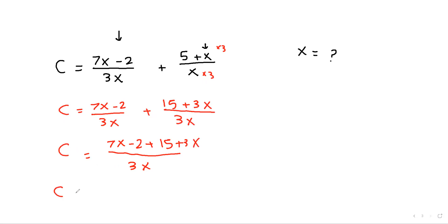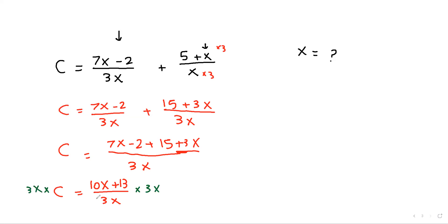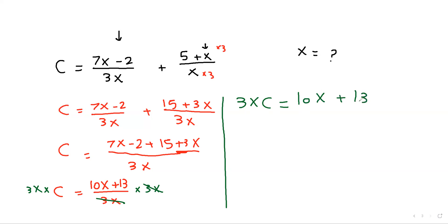Both fractions now share denominator 3x, so we combine them: c equals (7x minus 2 plus 15 plus 3x) over 3x. Collecting like terms: 7x plus 3x equals 10x, and negative 2 plus 15 equals 13, giving c equals (10x plus 13) over 3x. Multiply both sides by 3x, so 3xc equals 10x plus 13.